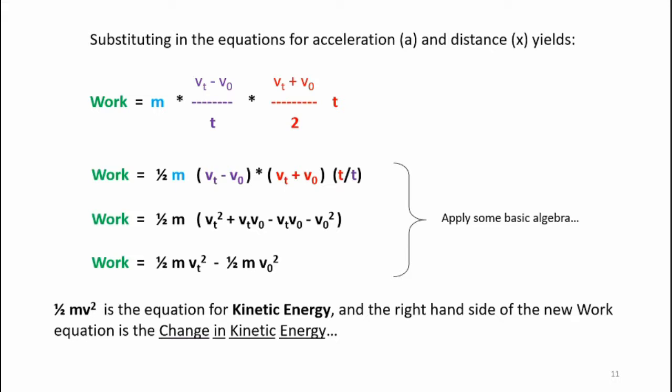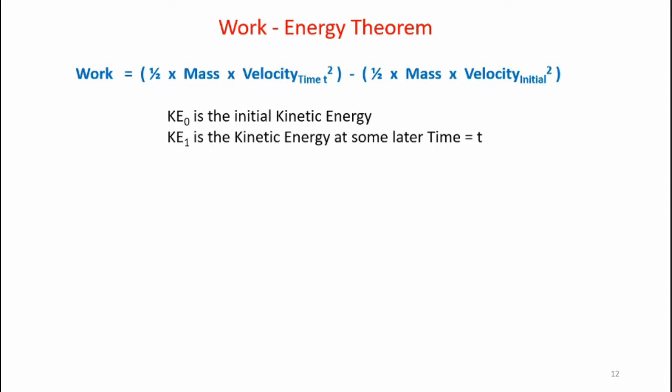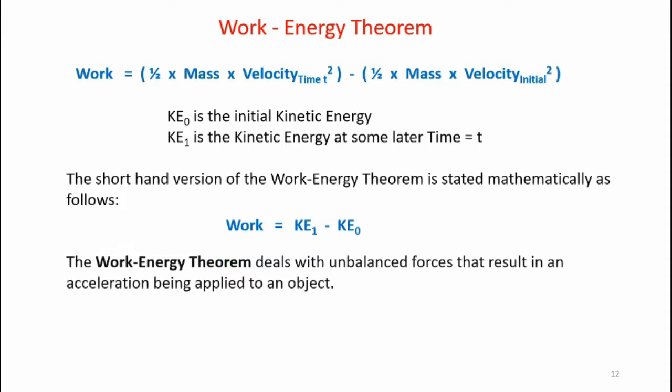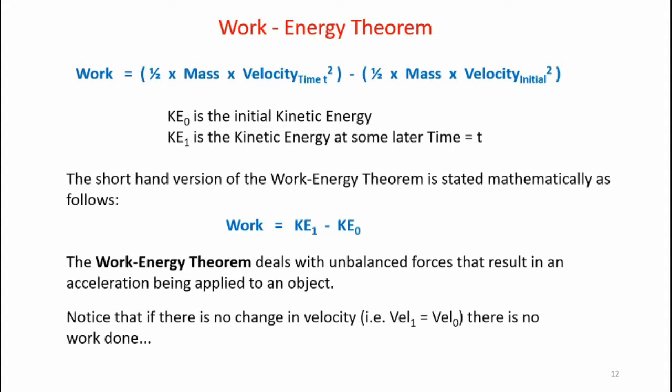We know that one-half m v squared is the equation for kinetic energy, and the right-hand side of the new work equation represents the change in kinetic energy. If we define the initial kinetic energy as KE sub 0 and the kinetic energy at some later time t as KE sub 1, we can write the shorthand version: work is equal to KE sub 1 minus KE sub 0. The work energy theorem deals with unbalanced forces that result in acceleration. If there's no change in velocity, the acceleration is zero and there is no work done on the object.